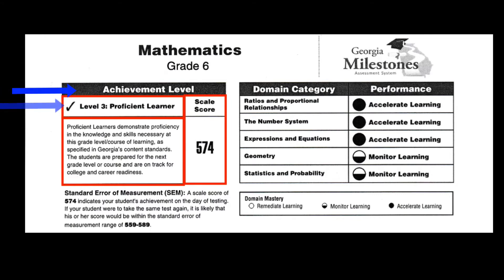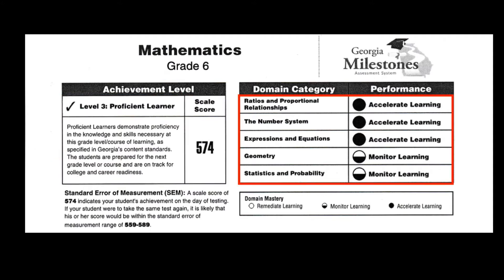This section shows the child's achievement level. This particular student was a Level 3 proficient learner, and it describes what a proficient learner is along with the score received. The next area shows the child's proficiency based on each domain. In sixth grade mathematics there are five domains: ratios and proportional relationships, the number system, expressions and equations, geometry, and statistics and probability. The same key is used — the child is either a remediate learner, a monitor learner, or an accelerate learner.